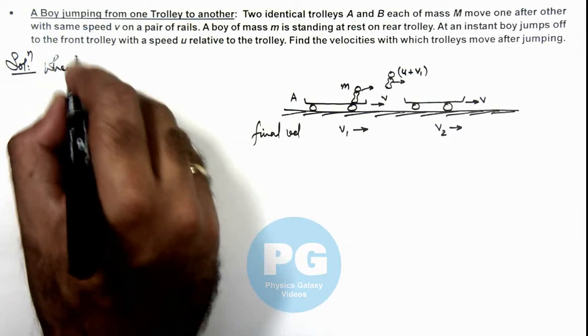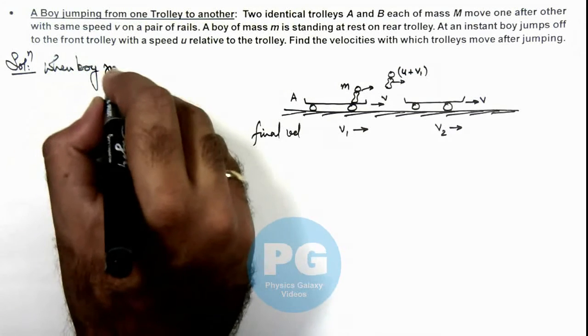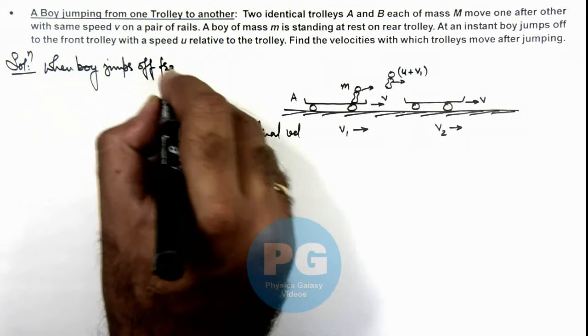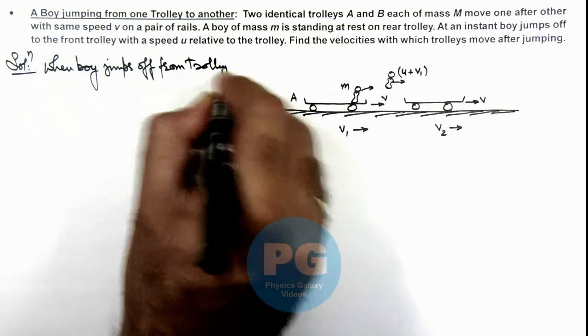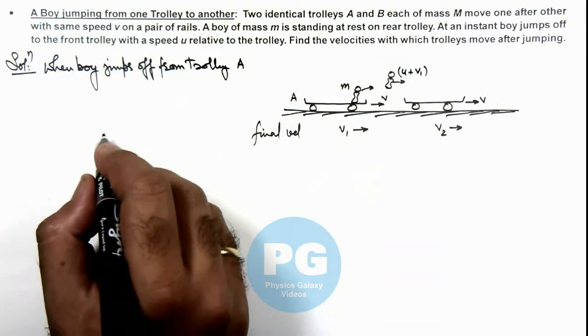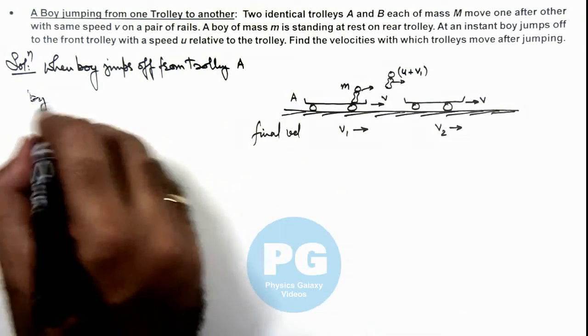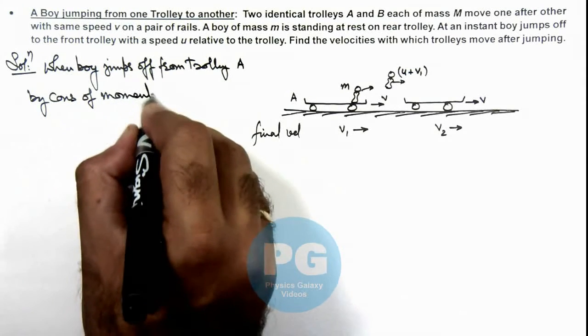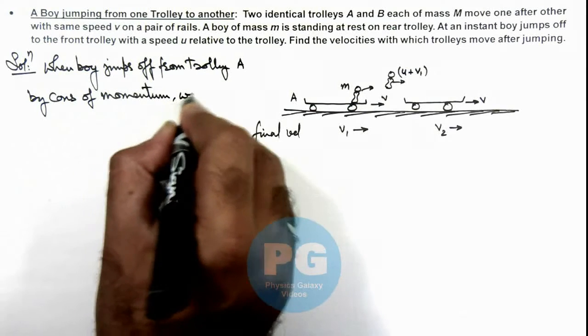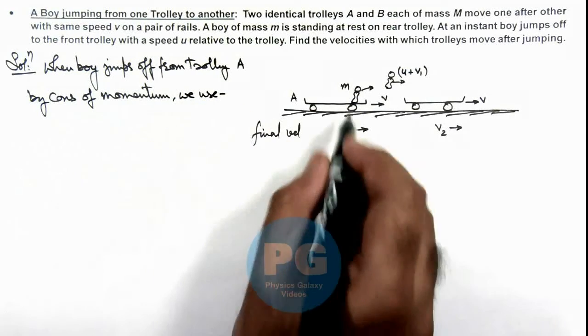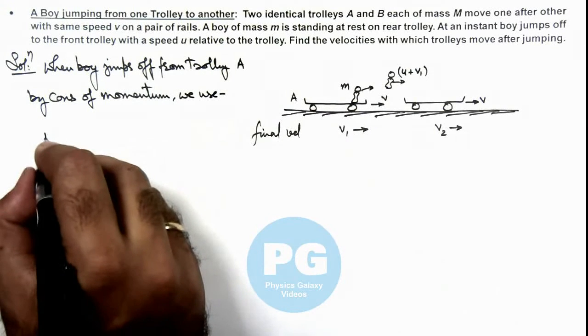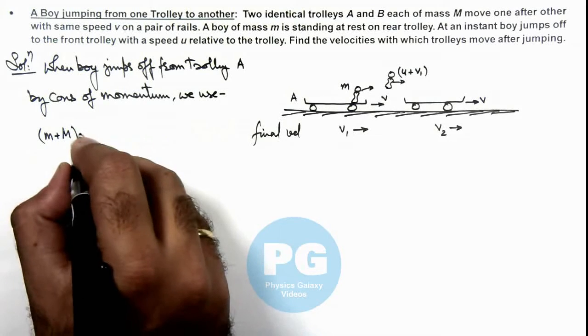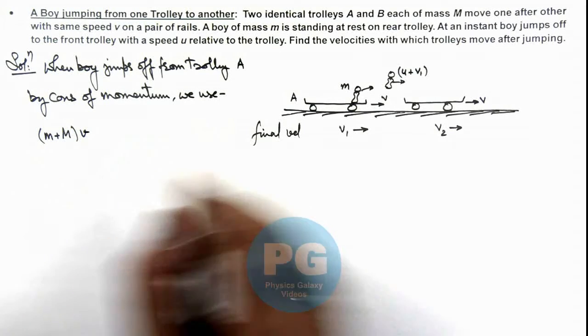When the boy jumps off from trolley A, by conservation of momentum, the initial momentum of the boy plus trolley system is (m + M) multiplied by v. As the boy jumps off, we can write the equation.